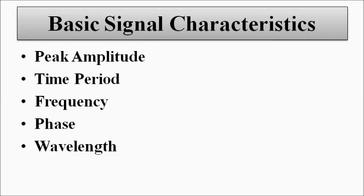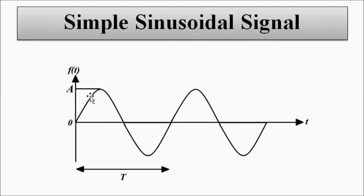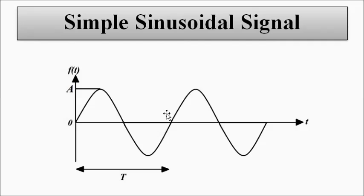We have discussed about these things. This is how we have a simple sinusoidal signal. Most of the signals that we will study, we will study from the point of view of a sinusoidal signal, or we will try to approximate it to a sinusoidal signal, because it is the simplest of all signals to analyze and the representation is simple. This is a simple sinusoidal signal — a periodic signal with time period T, peak amplitude A, and frequency 1/T, which is F.